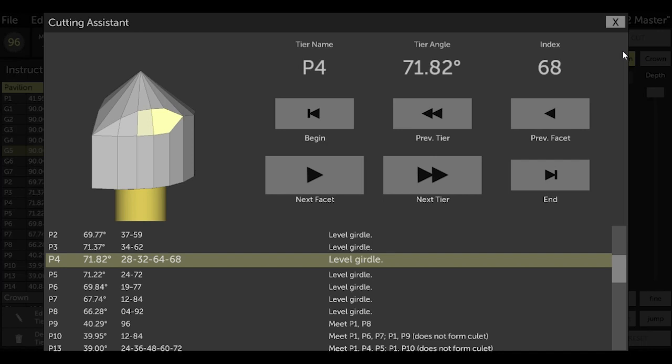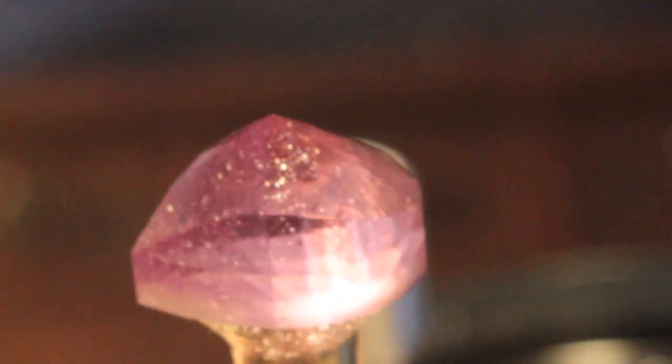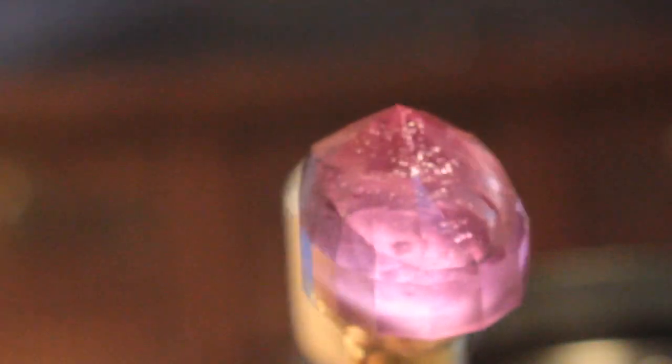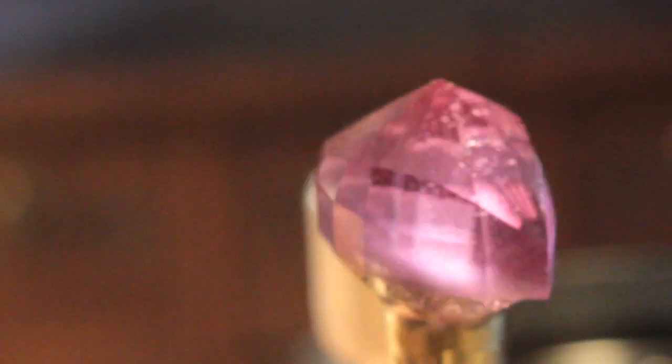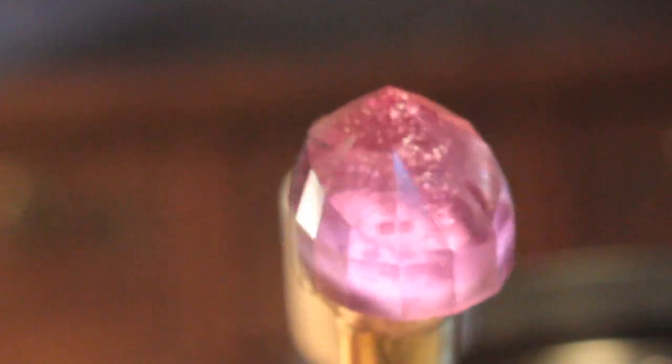I polished the bottom half of our lab-created alexandrite with 60,000 grit diamond on a zinc lap and it polished up no problem. You can see now inside this rough there's a lot of bubbles, but it's still a beautiful piece of rough. I'll now transfer the stone and start to cut the upper half.